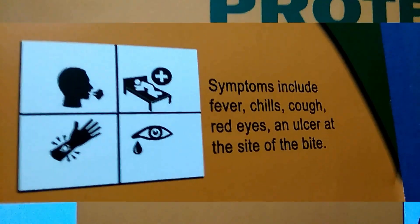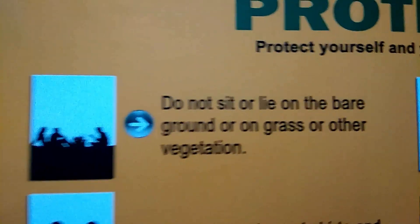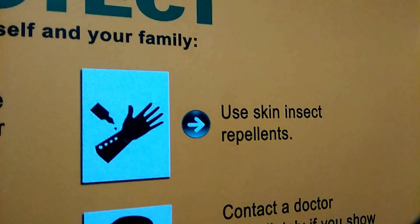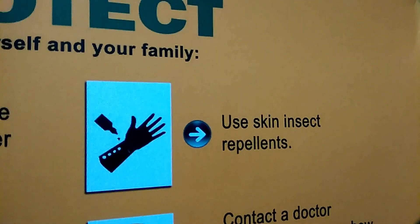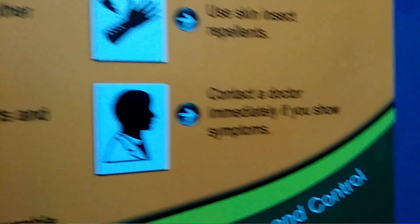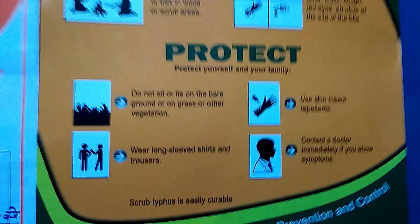To protect yourself and your family, follow these tips: do not sit or lie on bare ground, grass, or other vegetation. Use skin insect repellents. Wear long-sleeved shirts and trousers. Contact a doctor immediately if you show symptoms, because scrub typhus is easily curable.